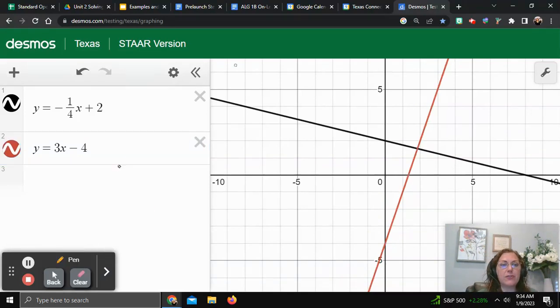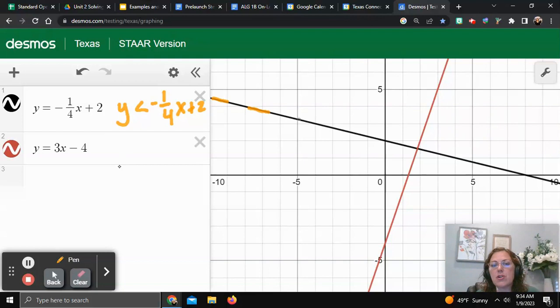With my first one, which was actually y is less than negative one-fourth x plus 2, because it did not have an equal to underneath it, I know it should be a dashed line. So I'm just going to draw over it so you can see I would actually put a dashed line for this one. And it's less than, so I know that I need to shade below the y-intercept, so I would shade this side.